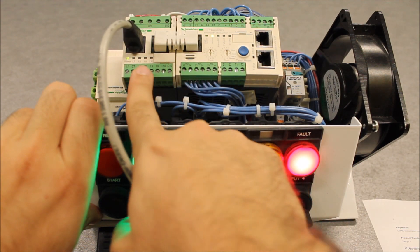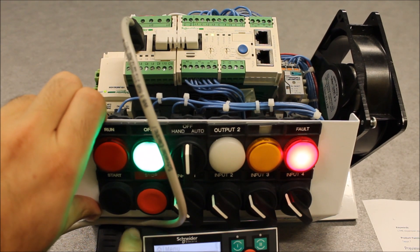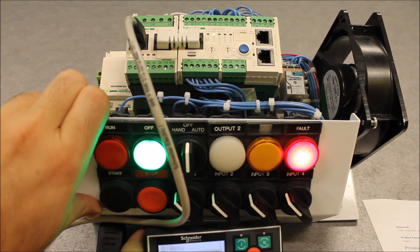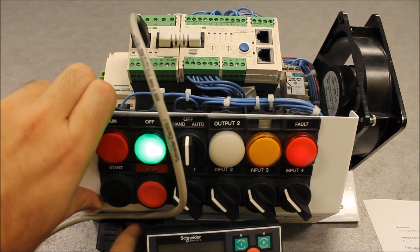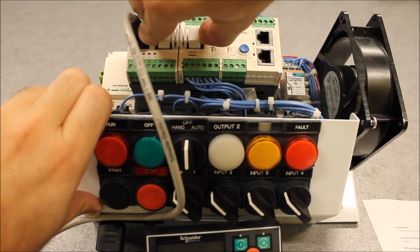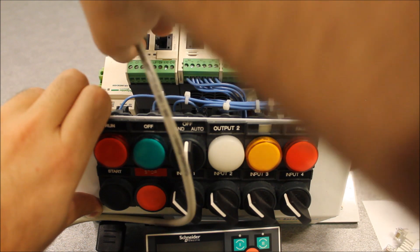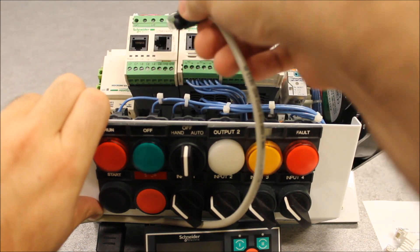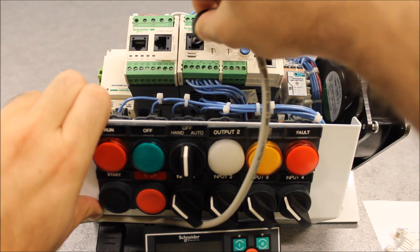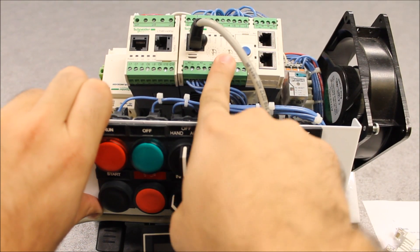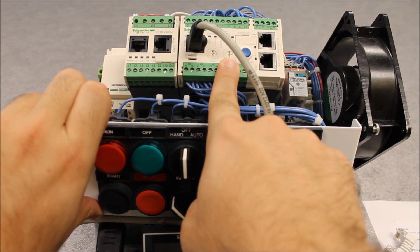And we also have the expansion module on the left. Let's assume that you do not have an expansion module. It would look like this, where you have to hook up your display to this left-most port on your actual LTMR controller.